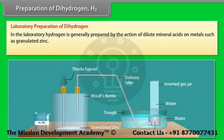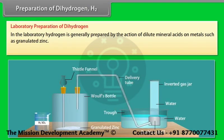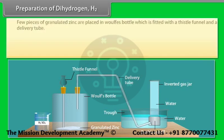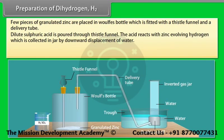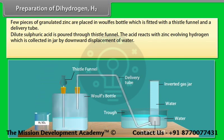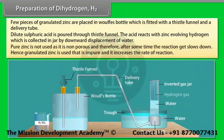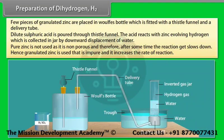In the laboratory, hydrogen is generally prepared by the action of dilute mineral acids on metals such as granulated zinc. A few pieces of granulated zinc are placed in a Woulfe's bottle fitted with a thistle funnel and a delivery tube. Dilute sulphuric acid is poured through the thistle funnel. The acid reacts with zinc, evolving hydrogen, which is collected in a jar by downward displacement of water. Pure zinc is not used as it is non-porous and after some time the reaction slows down. Hence, granulated zinc is used — it is impure and increases the rate of reaction.